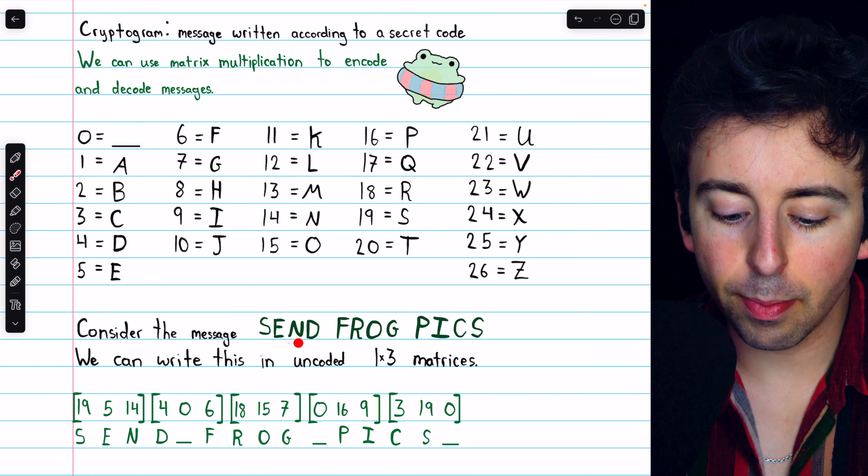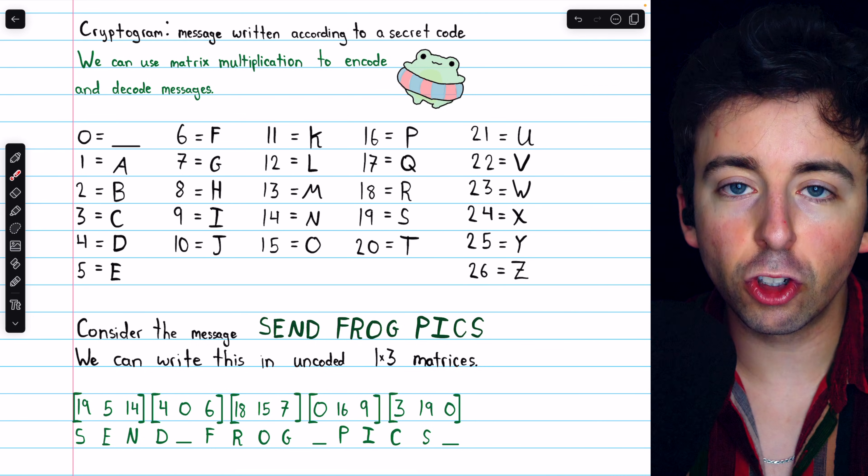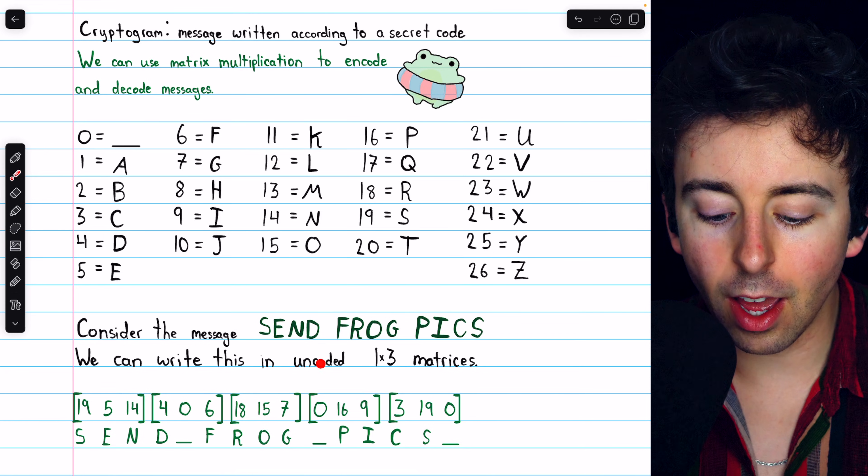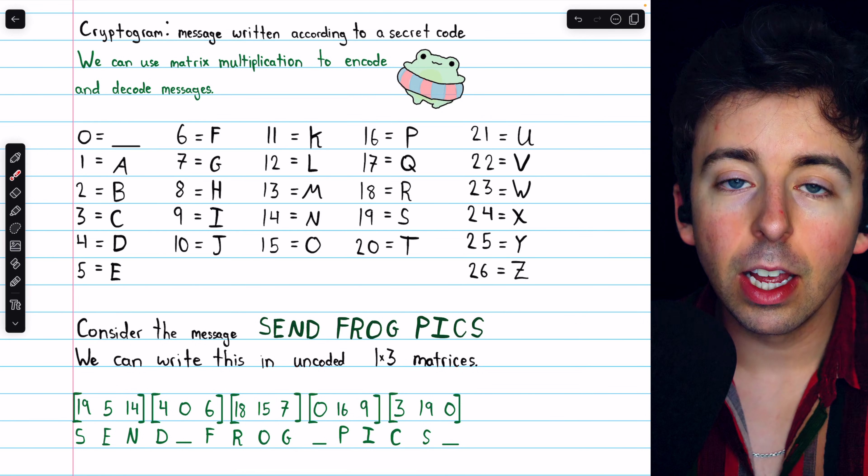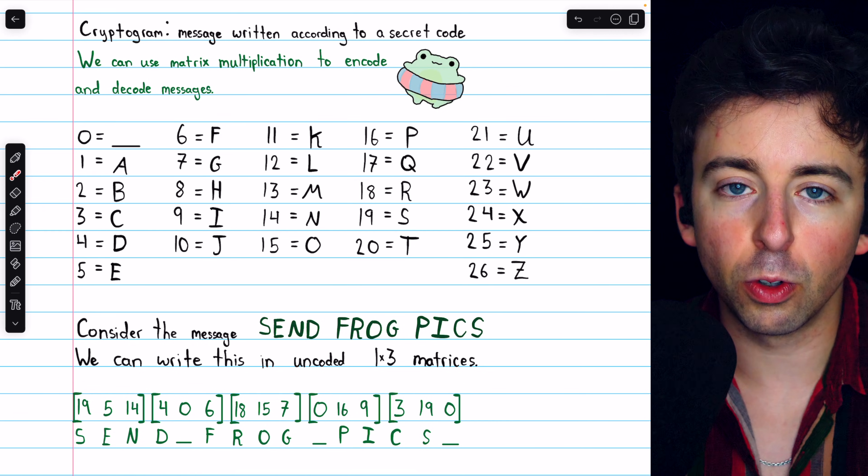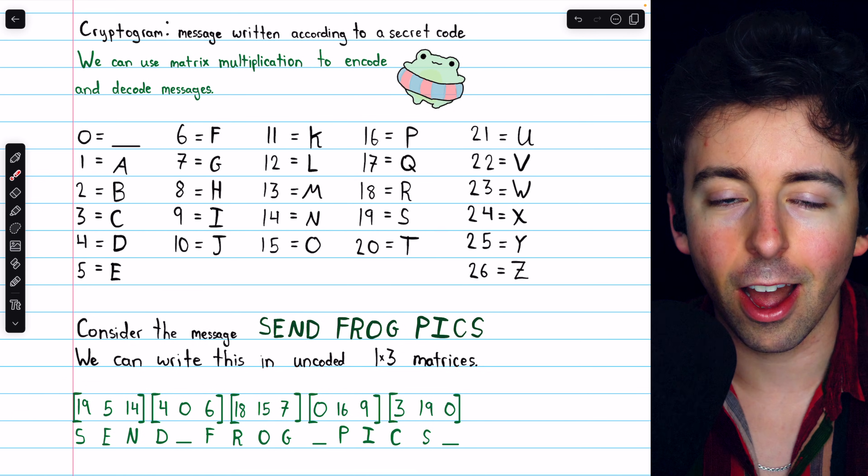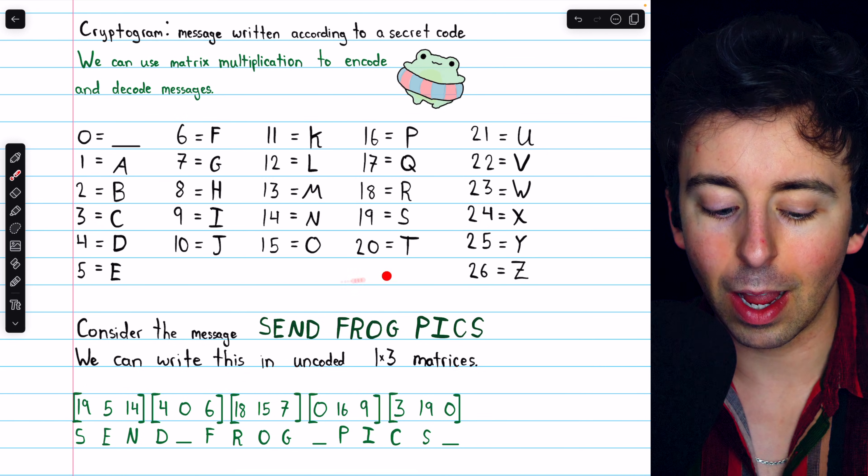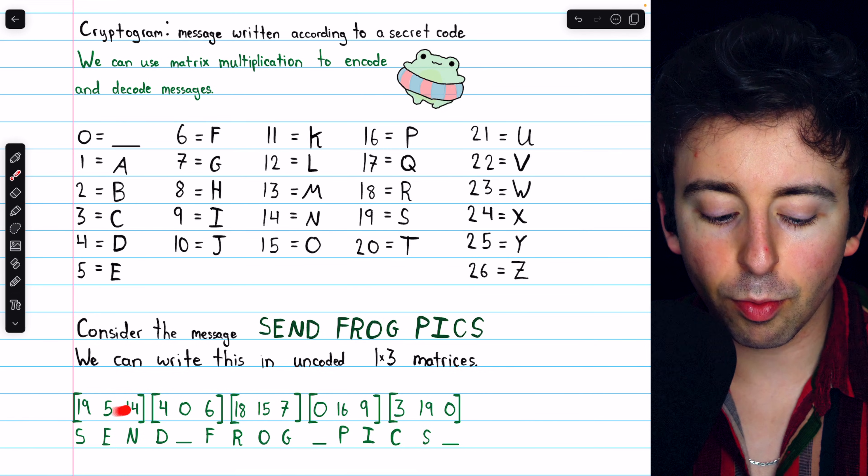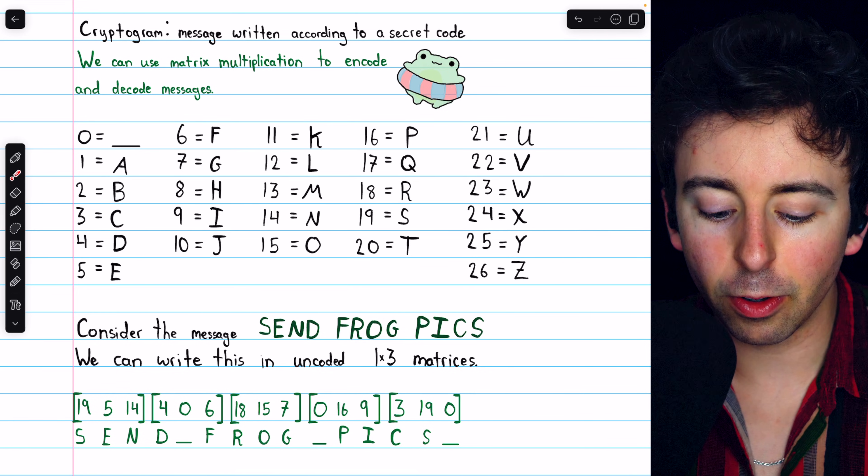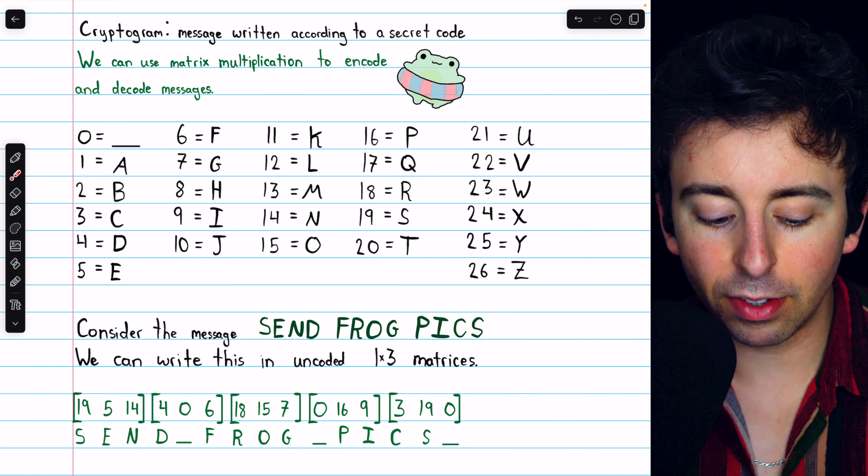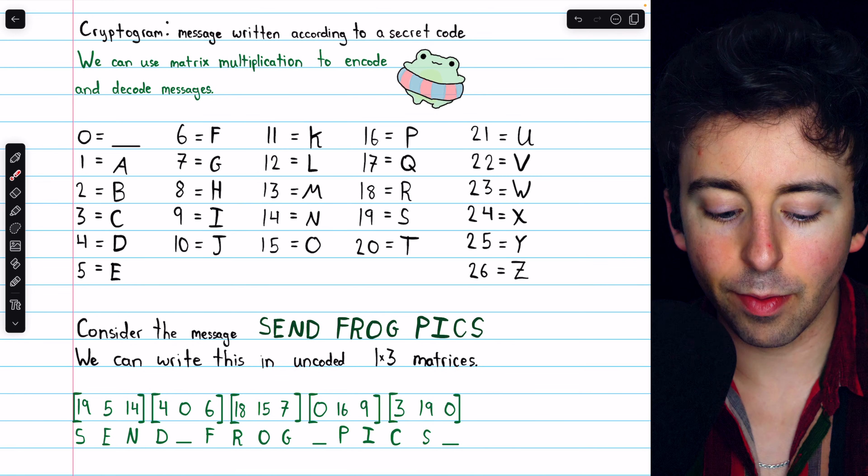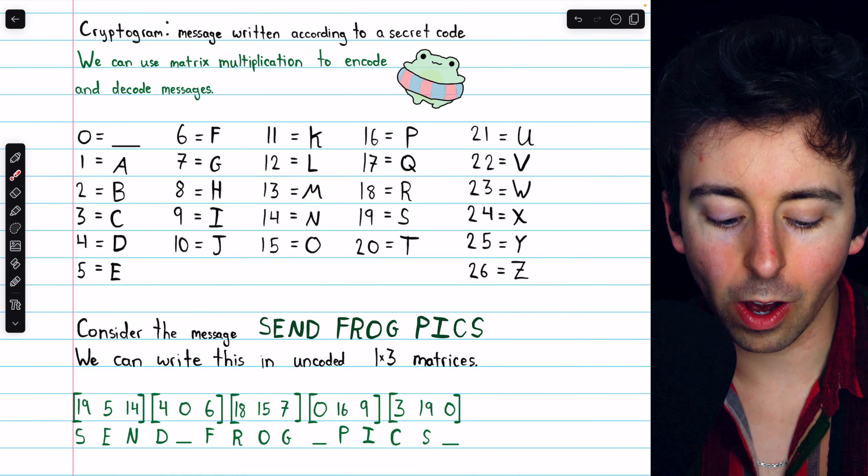Now, we'll consider this message, which I send people a lot, the message Send Frog Pics. What we can do is write this message in uncoded 1x3 matrices. So we're breaking down this message into three characters at a time, where each character is represented by a number based on the assignment described here. So the first 1x3 matrix, for example, would have the first three letters, S, E, and N, but specifically, they are represented by their numbers, 19 for S, 5 for E, and 14 for N.